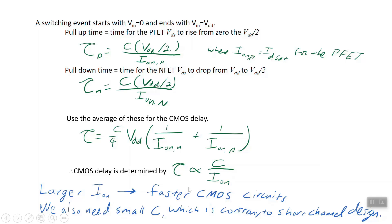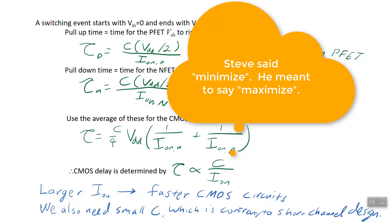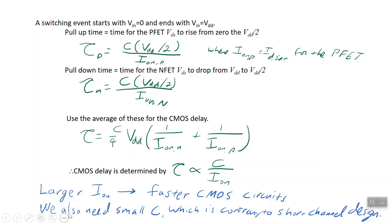As a general rule of thumb, the CMOS delay goes as capacitance over the saturation current of the MOSFETs. A larger saturation current, which from now on we'll talk about as I on, means you have yourself a faster CMOS circuit. That's a design goal. The design objective is to minimize the current that gets drawn during the switching operation. We would benefit from a small capacitance in order to have a faster gate. There's a lot of focus on simply making I sub on as big as possible.